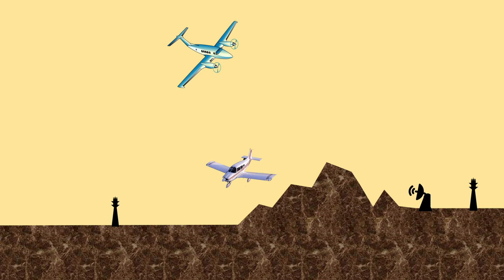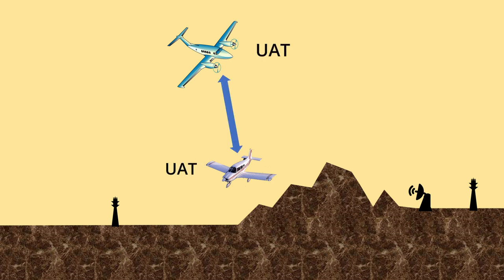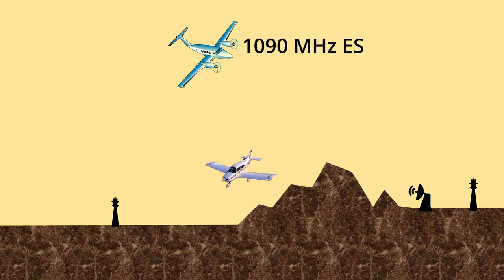Right now, there are two systems installed on aircraft. One is the UAT, or Universal Access Transmitter, which operates at 978 MHz. When aircraft are using 978 MHz, they can continually update and report their position to not only the ground stations, but also to other aircraft using the same 978 MHz system. The other ADS-B system that can be installed in aircraft — especially for those flying in Class A airspace above 18,000 feet — are required to have the 1090 MHz extended squitter system.